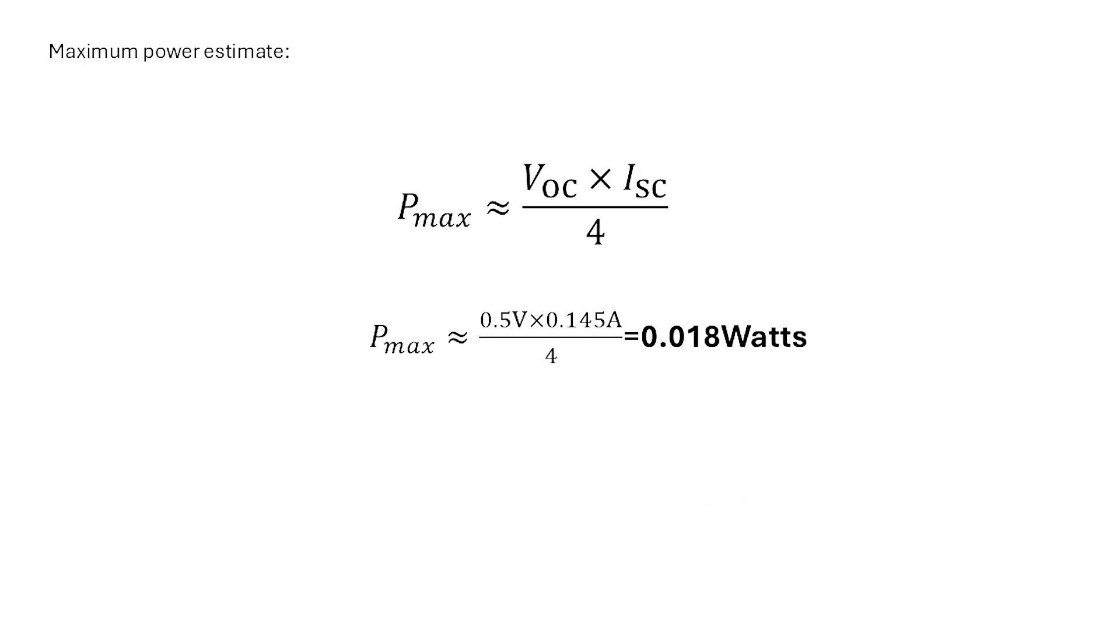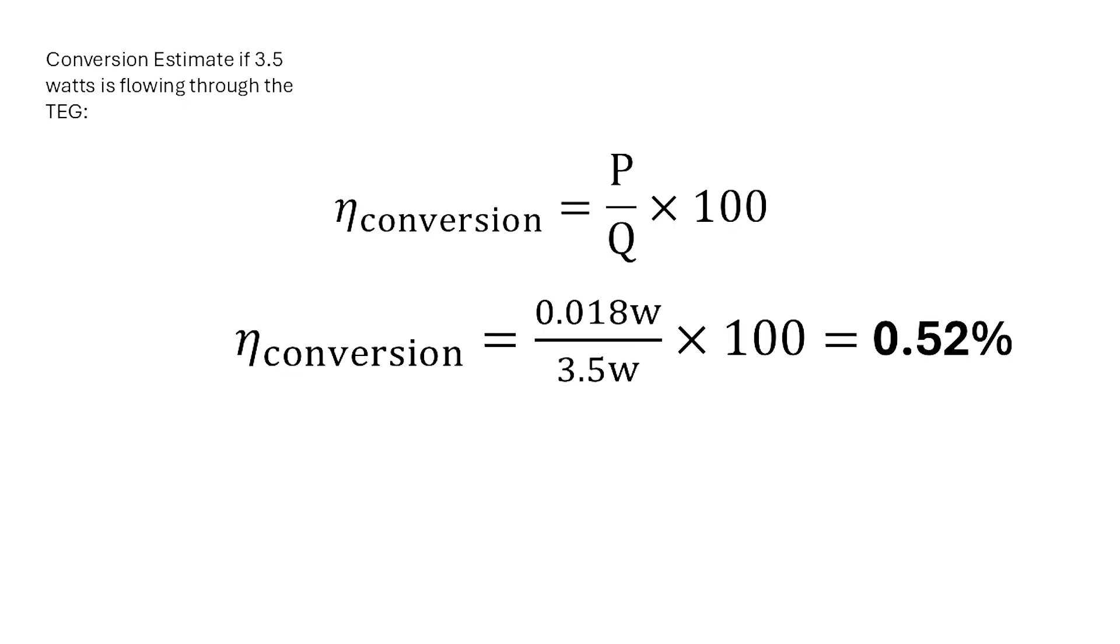For maximum power, we can use the numbers that we got with our multimeter, by multiplying the open circuit voltage times the short circuit current. Doing so, we get around 0.018 watts, which seems reasonable given that our motor was able to draw around 0.004 watts. Knowing that we're limited by the heat dissipation of 3.5 watts, we can compute the conversion efficiency to come out to around 0.5%.